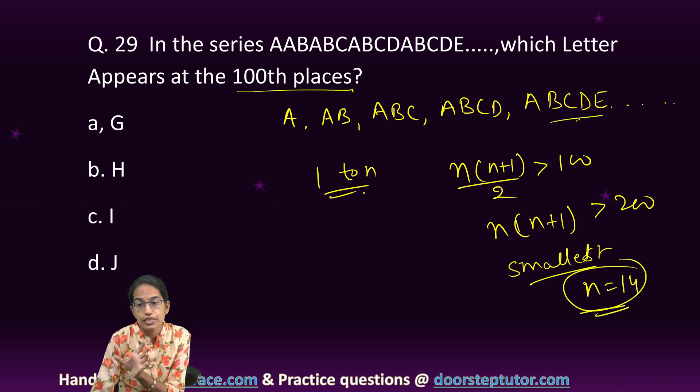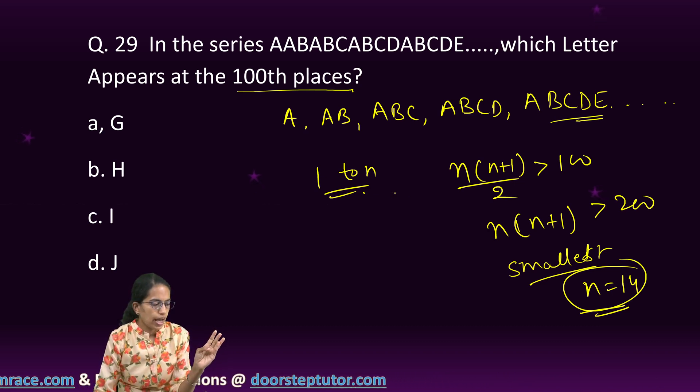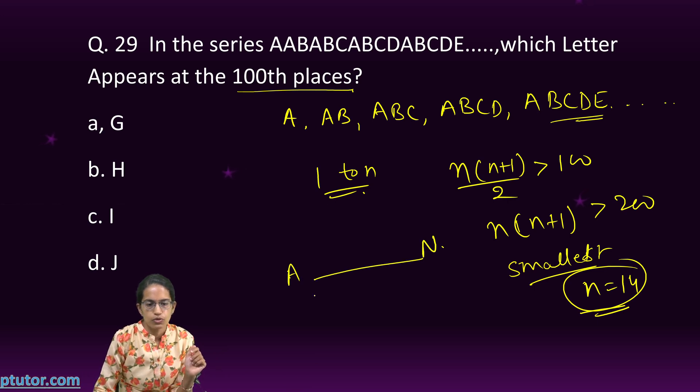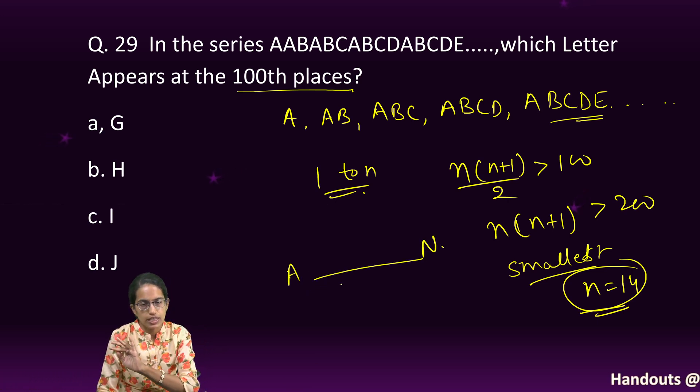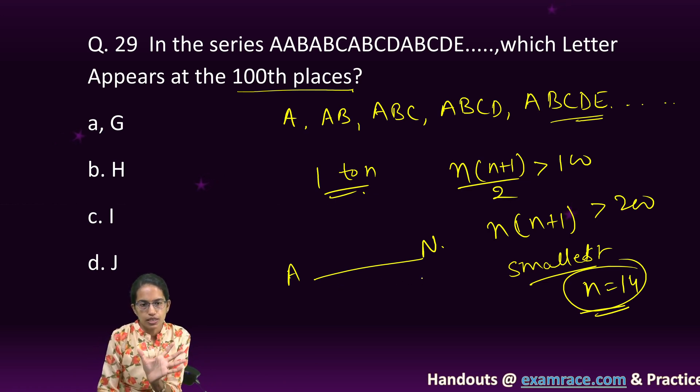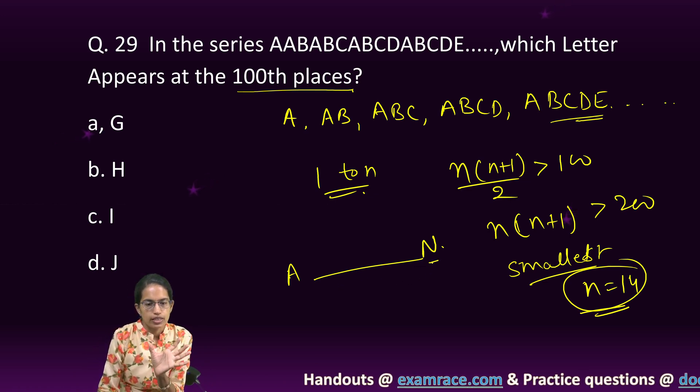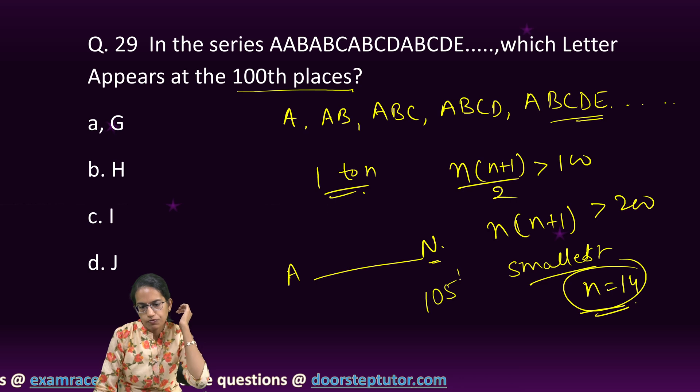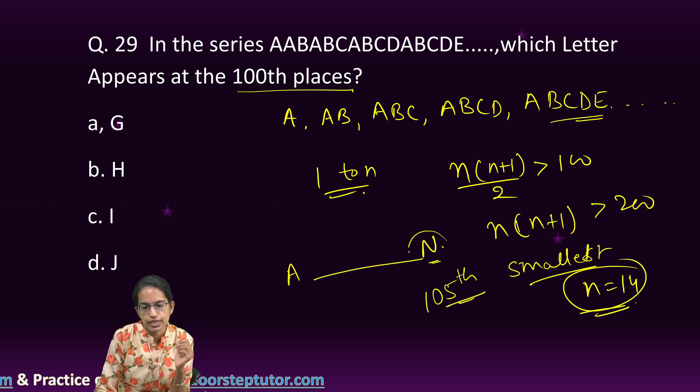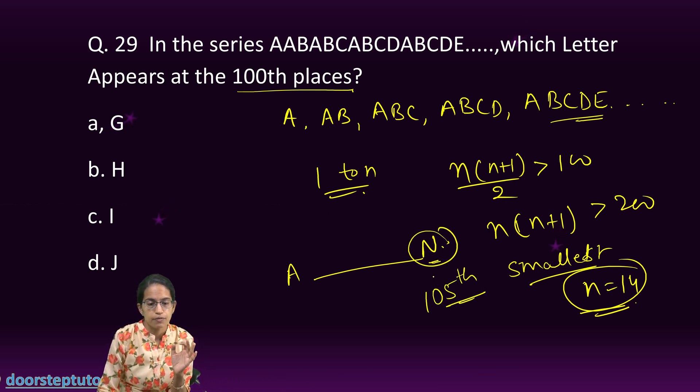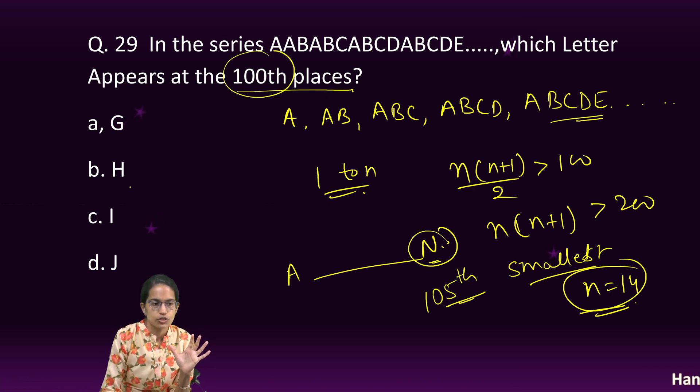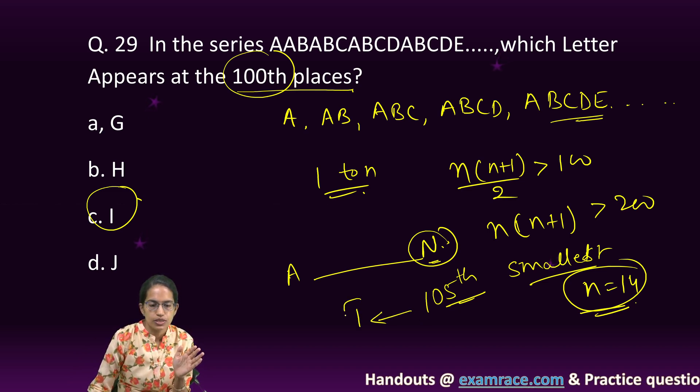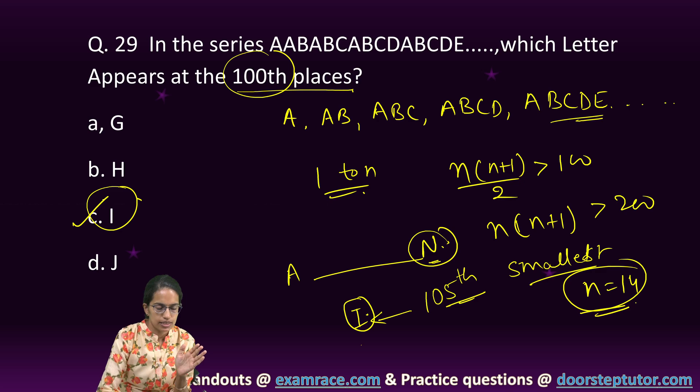Now, since N is 14, that means there are the 14th term. What would be the 14th term? I count on A, B, C, D, it goes up to N. So, from A to N would be the 14th term. So, A, B, C, D, E, F, G, H, I, J, K, L, M, N. That would be the term that I would have. In this term, what would be the last one? Last one would be how much? 105th letter. So, N is which letter? 105th letter. Now, I have to find out the 100th letter, which it would be? It would be I. I just move five places back to it. So, it becomes I. Clear? The correct answer here is I.